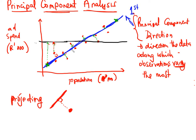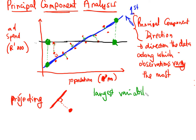The variability on the black line is less than the variability of all the points projected onto the blue line. The blue line is the direction that gives us the largest variability, and that becomes our first principal component direction — the one with the largest variability. We're going to see an example with calculations to see how that works.